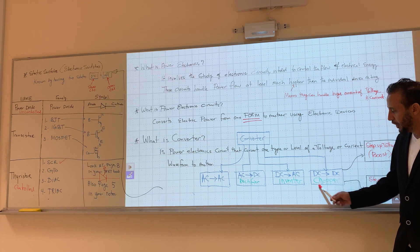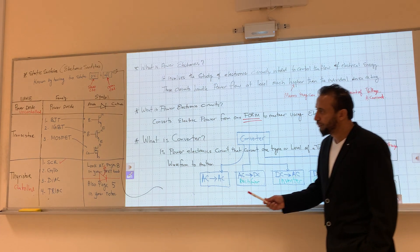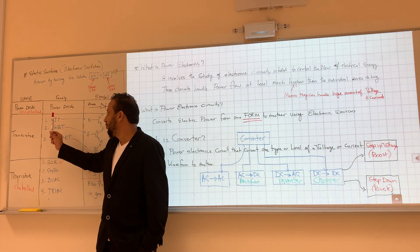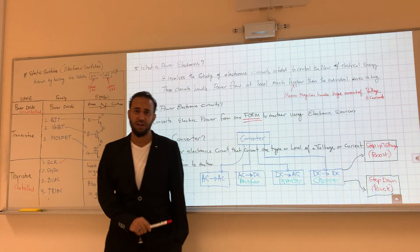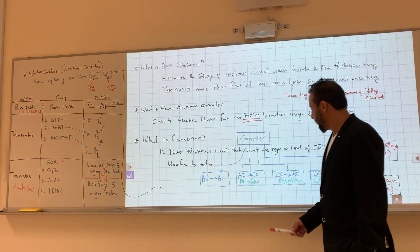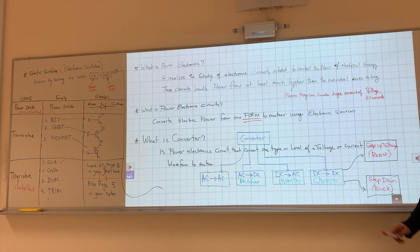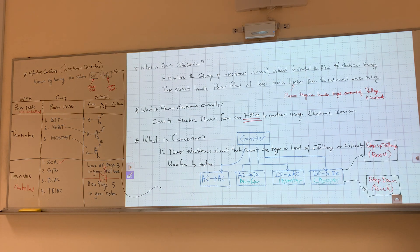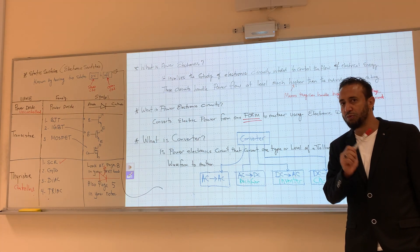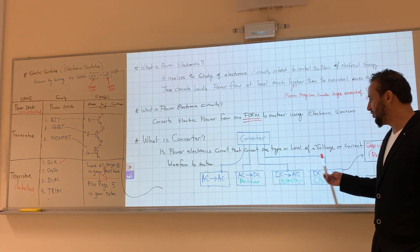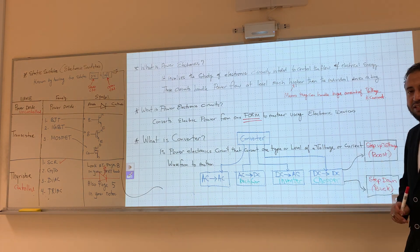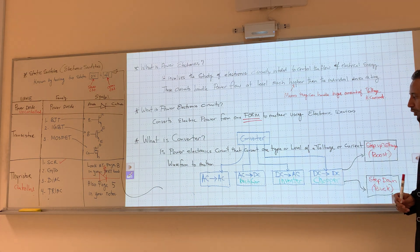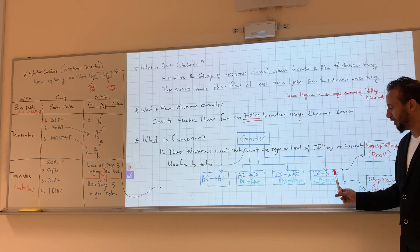Then we'll cover DC-to-DC conversion, which we call a chopper. We convert a fixed DC voltage into a variable DC voltage — for example, 100 volts can be varied up or down. We use the MOSFET transistor for this. We have two types: step-up, which is the boost converter, and step-down, which is the buck converter. We'll spend about two to three weeks on this.